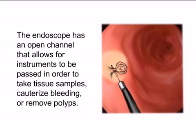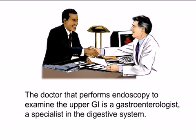The endoscope has an open channel that allows for instruments to be passed in order to take tissue samples, cauterize bleeding, or remove polyps. The doctor that performs endoscopy to examine the upper GI is a gastroenterologist, a specialist in the digestive system.